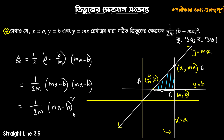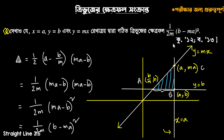1 by twice m into ma minus b whole square. So I will prove b minus ma. Now in square I will give negative positive. So I will write a negative one, so I will write b minus ma. Therefore: 1 by twice m into b minus ma whole square. So this is the 3×3.